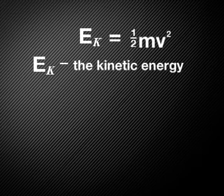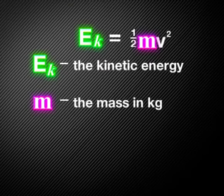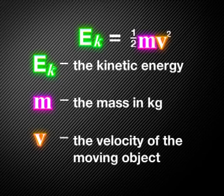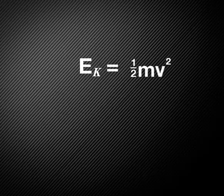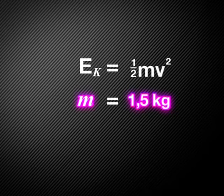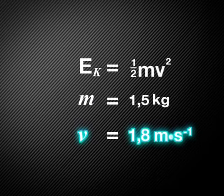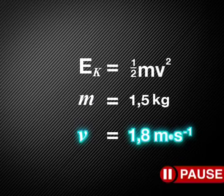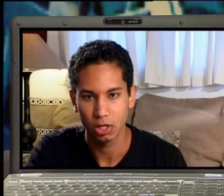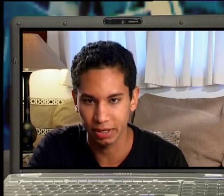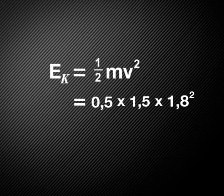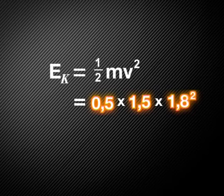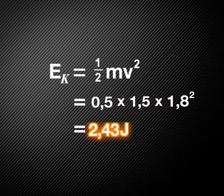We can use the formula for kinetic energy: kinetic energy equals half times mass times velocity squared. Why don't you try to calculate the hammer's kinetic energy? The hammer has a mass of 1.5 kilograms and a velocity of 1.8 meters per second. Using the formula, I substitute the information and multiply half of 1.5 by 1.8 squared. So the kinetic energy is 2.43 joules.